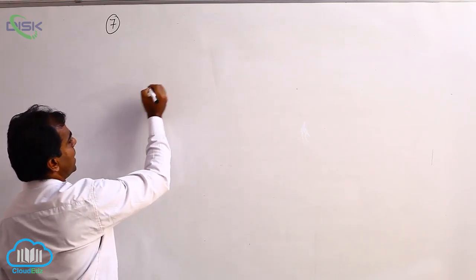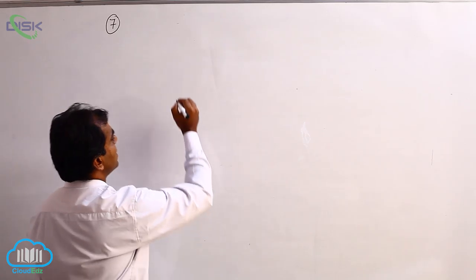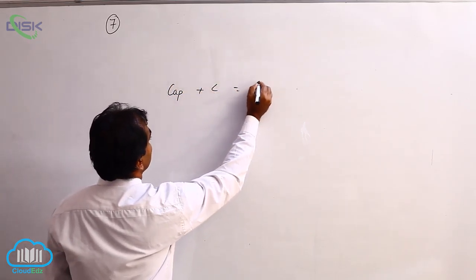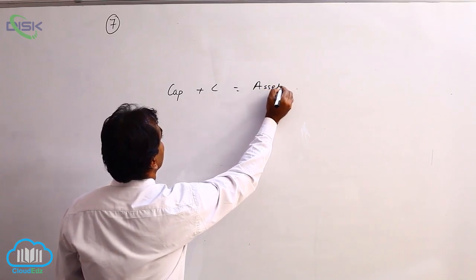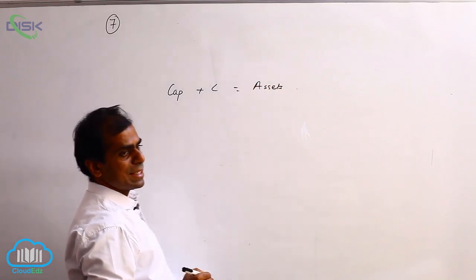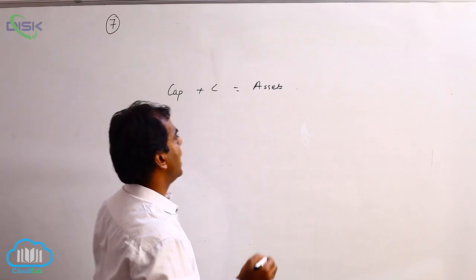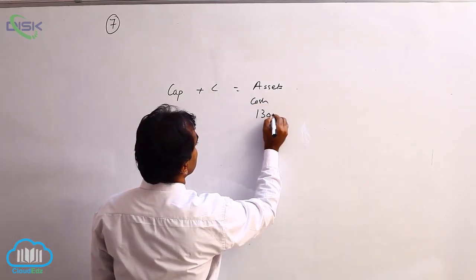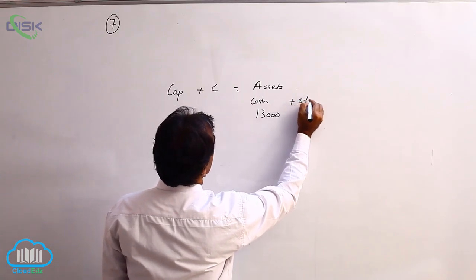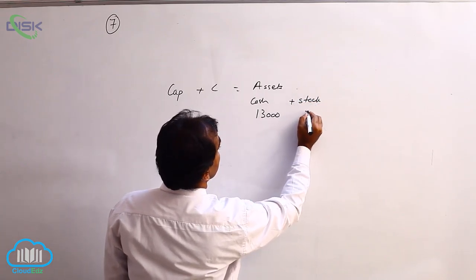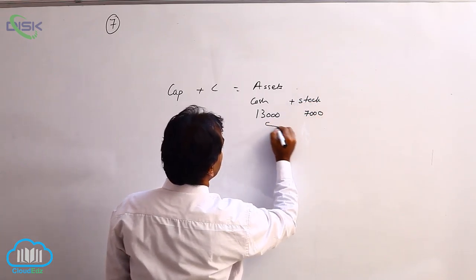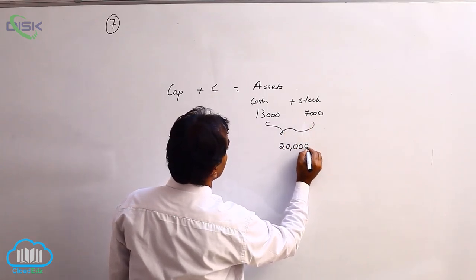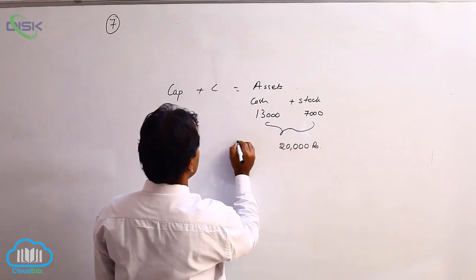In the previous problems we have used accounting equation. So what is accounting equation? We say capital plus liability equals assets. Now what are the assets we are having here? We are having cash 13,000 and also we have stock which is 7,000. So totally our assets are 20,000. We have resources worth 20,000.